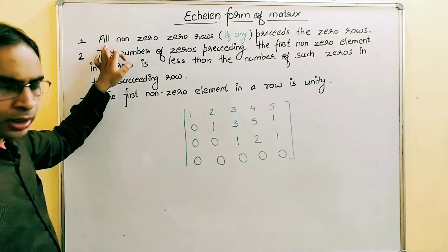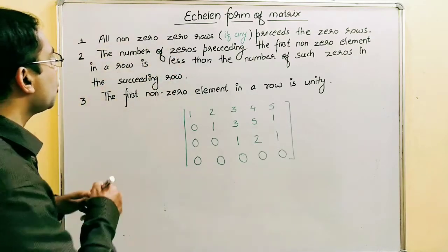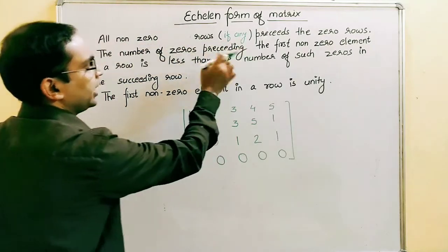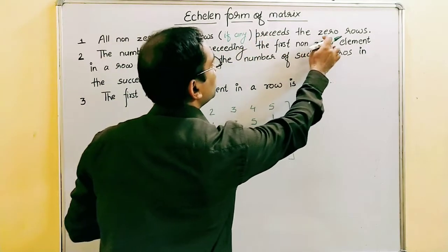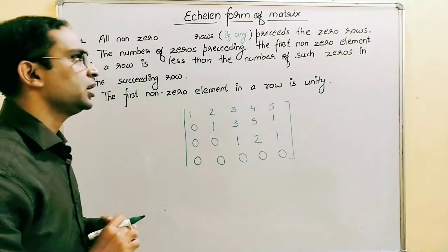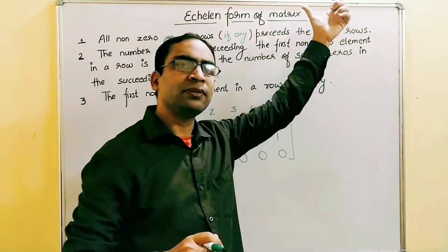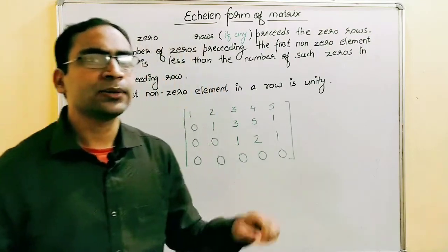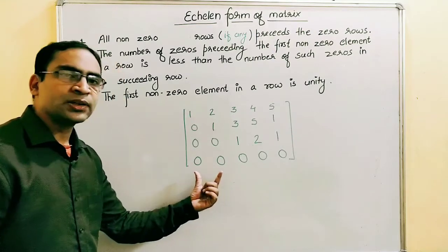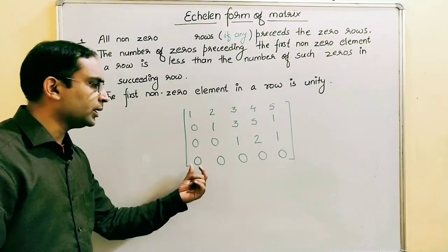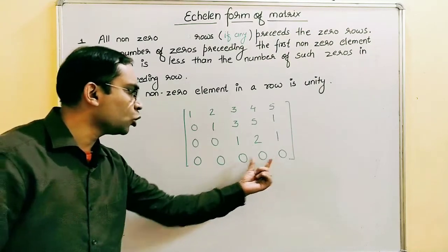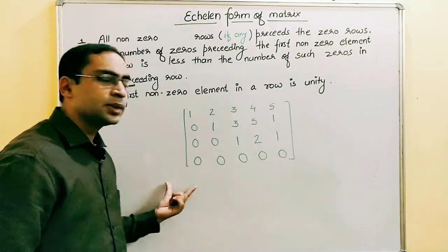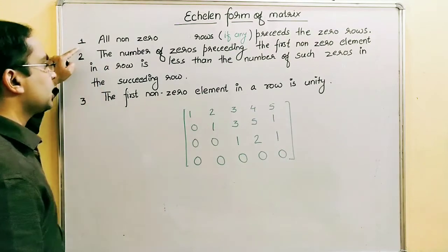Condition number one: all non-zero rows, if there are any, precede the zero rows. That means if in a matrix there is any zero row, it will be at the bottom and all non-zero rows will precede it. A zero row is a row with all zero elements, and we can see all non-zero rows are preceding this zero row. This is the first condition.